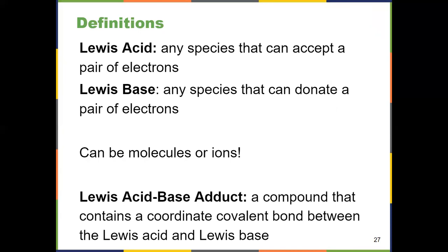Now, Lewis acids, Lewis bases, they could be molecules, they could be ions, all sorts of things. We're just looking at what they can possibly do. If it can possibly accept a pair of electrons, it's a Lewis acid. If it can possibly donate a lone pair of electrons, it's a Lewis base.